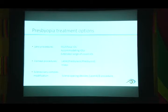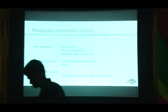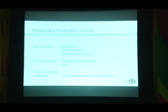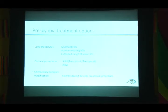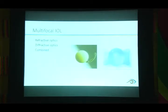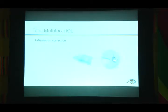The different procedures available are: lens procedures, corneal procedures, and sclerociliary complex modification. For lens procedures we have multifocal IOLs, accommodating IOLs, and extended range of vision IOLs. For corneal procedures: presbylasik, presbyond, and corneal inlays. Sclerociliary complex modification uses either a scleral spacing device or laser. Multifocal IOLs come in three types: refractive, diffractive, and combined.